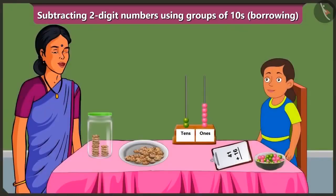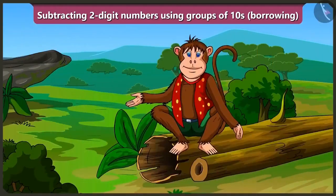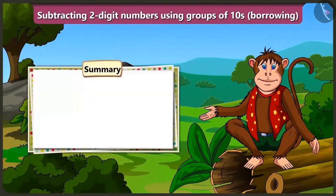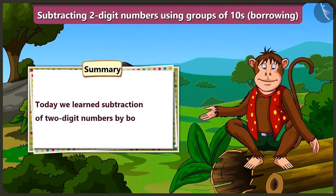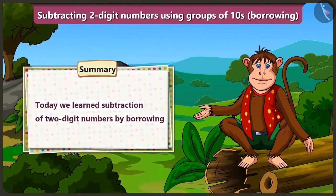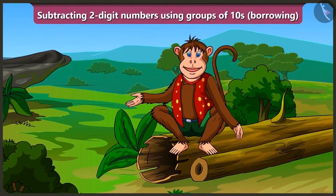Yes, in this way, if we fill the jar with 15 biscuits, then 25 biscuits would remain in this plate. Well done, Bubbly — you have subtracted without even writing. Yes, Mummy, you explained it to me very well. Friends, today we learnt subtraction of 2-digit numbers by borrowing without writing, with the help of Bubbly's abacus. In the next video, we will learn to trace some of the things in our surroundings.